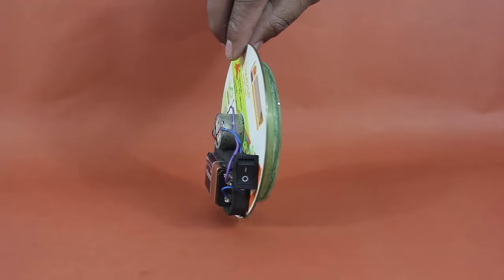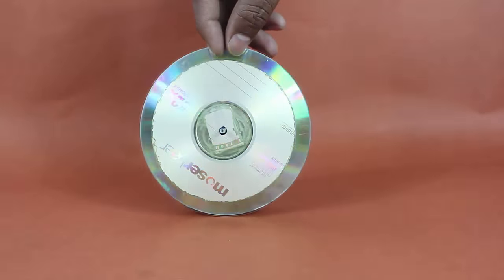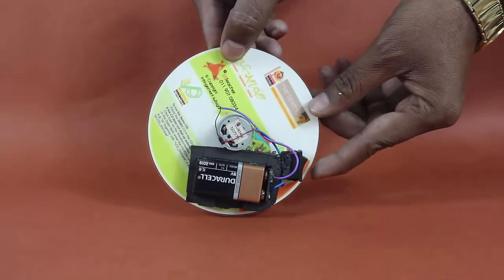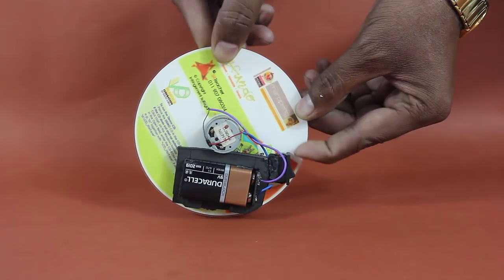Now the flywheel is attached to the CD. Finally, on switching the motor, the flywheel will spin very fast.